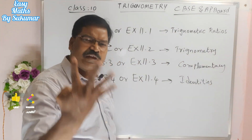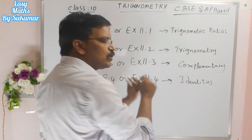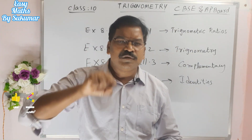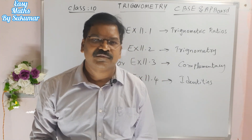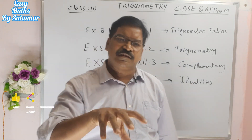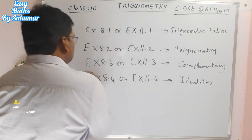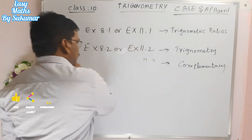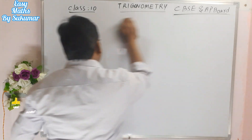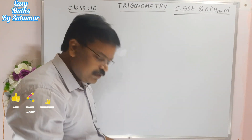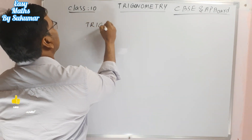Only four concepts — if you learn these four concepts, you will get 10 out of 10, that means full marks in trigonometry. The first concept is trigonometric ratios. There are three trigonometric ratios.